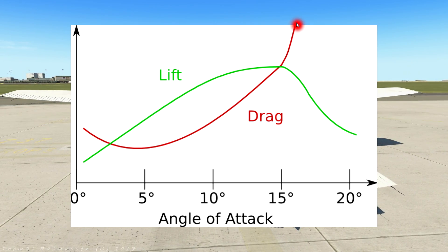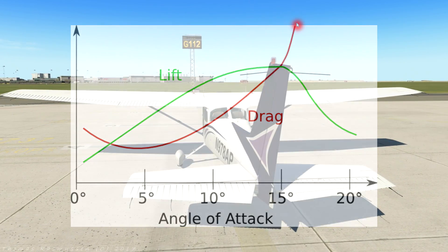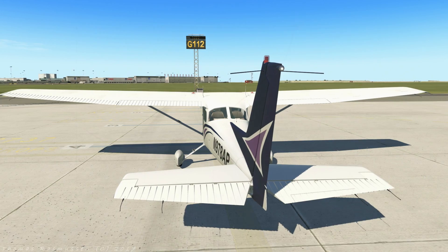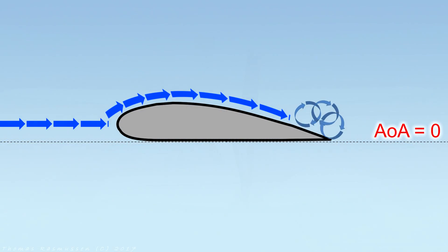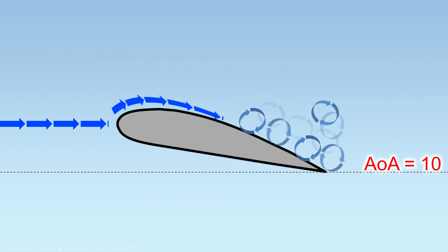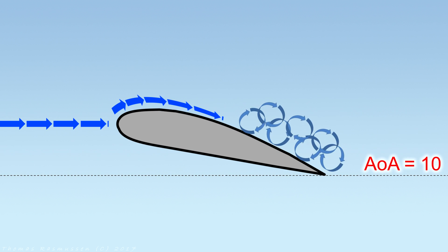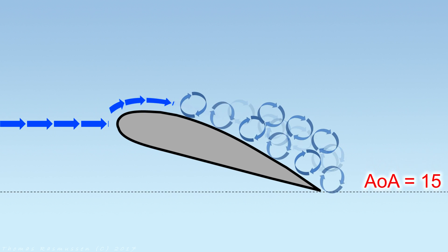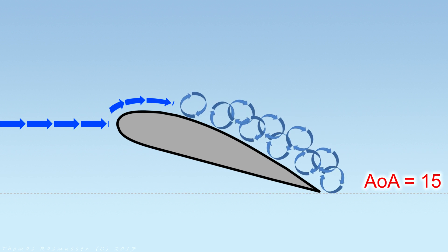Why does this occur? At small angles of attack, air flows over the wing smoothly and sticks to the surface of the wing. At the stall, however, the change in direction and pressure over the wing becomes too great and the air breaks away and becomes turbulent.